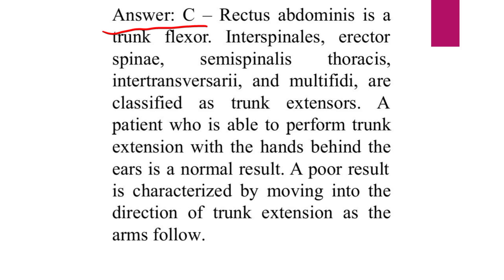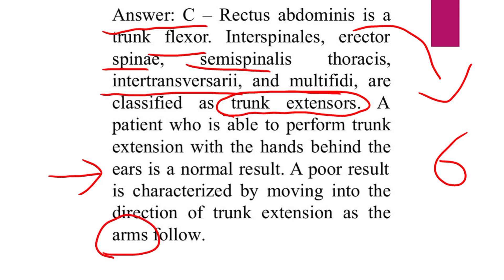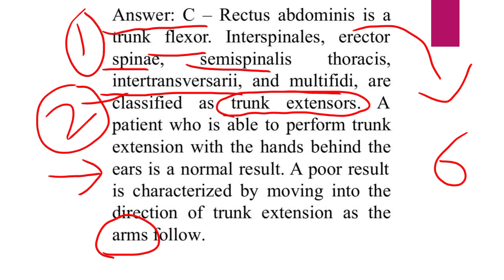Answer C is correct. The rectus abdominis is a trunk flexor, also called the six-pack muscle. Intraspinalis, erector spinae, semispinalis thoracic, intertransversarii, and multifidus are the trunk extensors — the group of muscles that extend the trunk. A patient able to perform trunk extension with hands behind the ears is a normal result. A poor result is characterized by moving into trunk extension as the arms follow the movement.